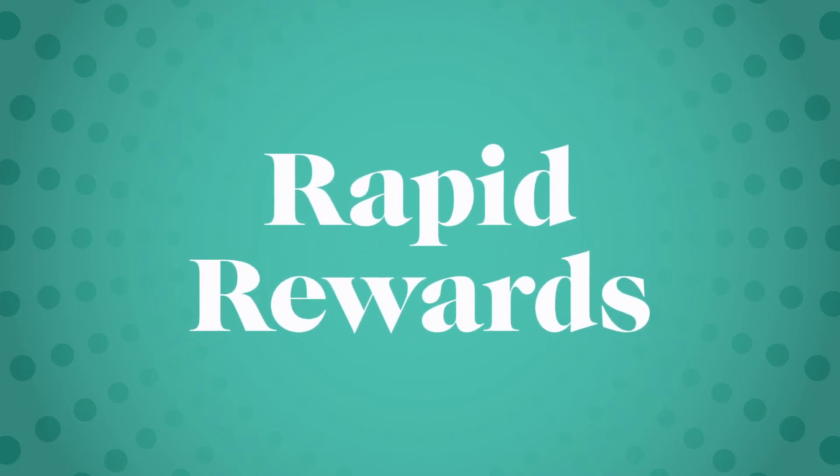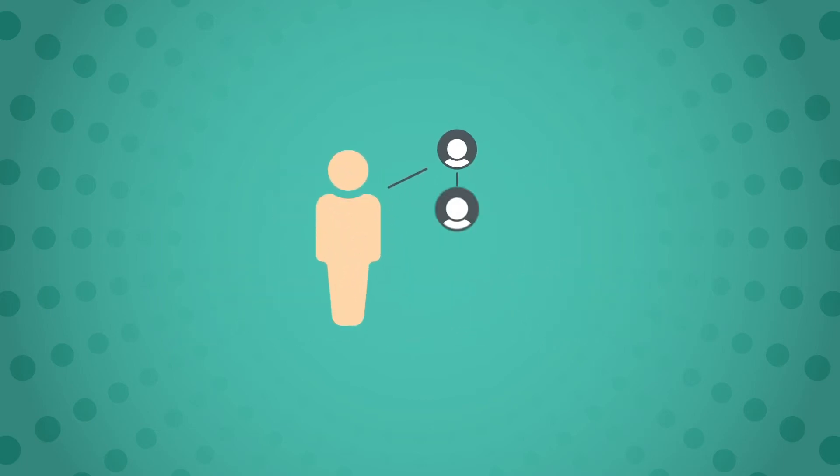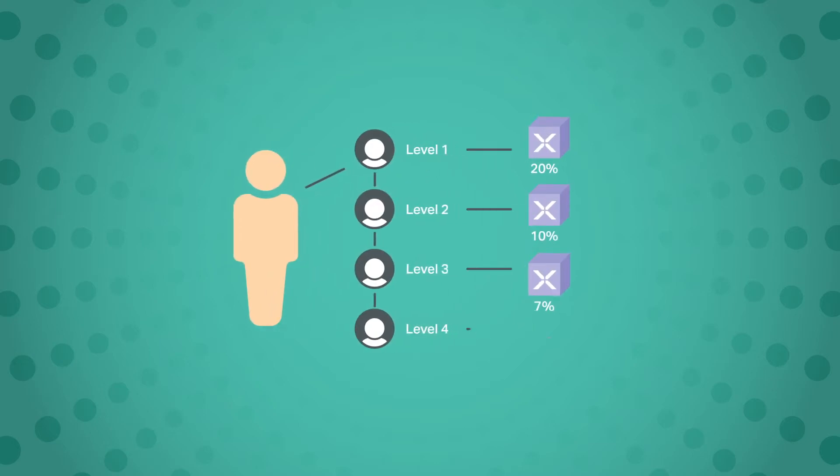Increase your Singular earnings through rapid rewards. For every new distributor or member you or your team enroll within the first four levels of your business, you'll earn up to 20% commissions from their product purchases made in their first calendar month at Singular.